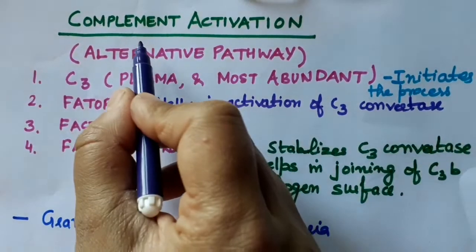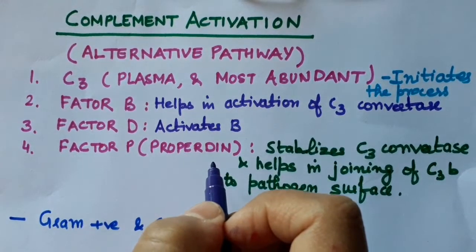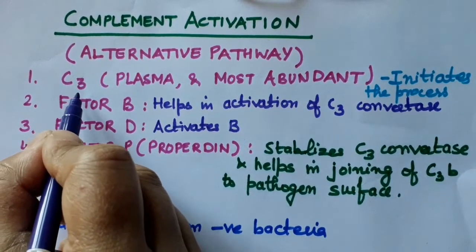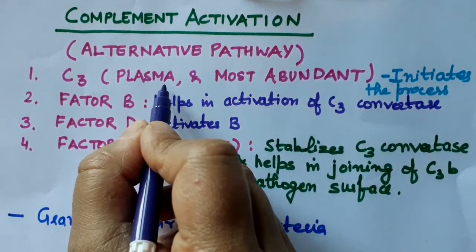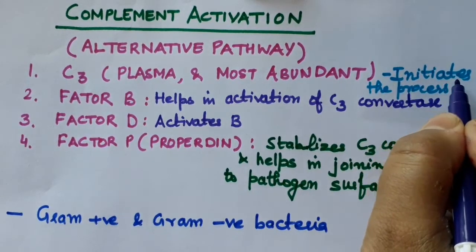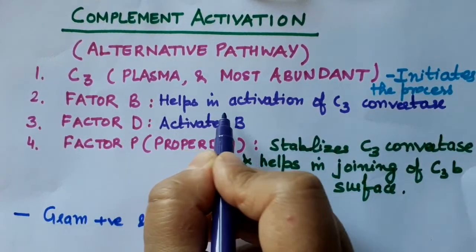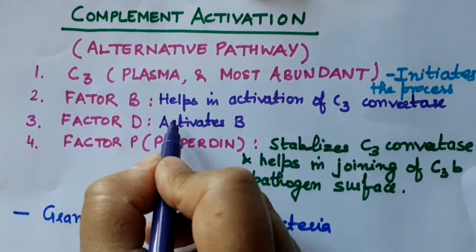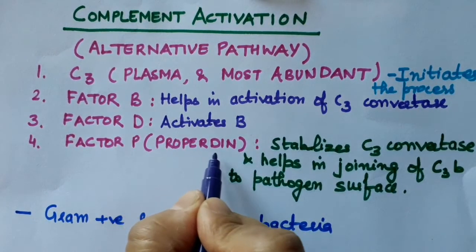Let's start the complement activation alternative pathway. This pathway consists of four different types of serum proteins. First is C3 which is already present in plasma and is most abundant, helping in activation or initiation of the process. Factor B helps in activation of C3 convertase. Factor D activates Factor B. Factor P, also called Properdin, stabilizes the C3 convertase.